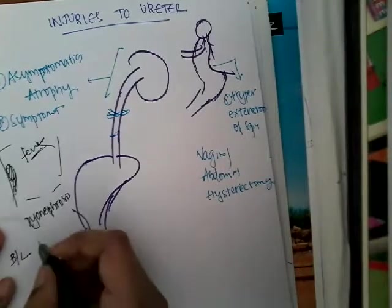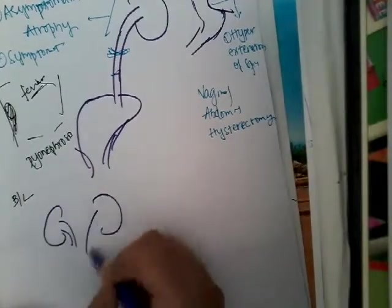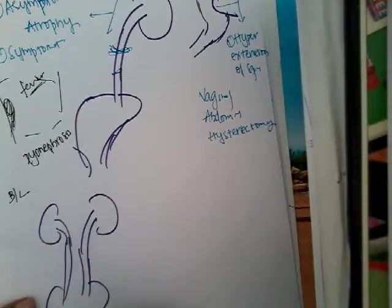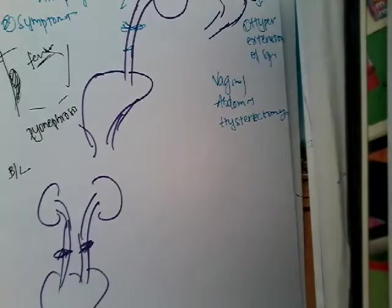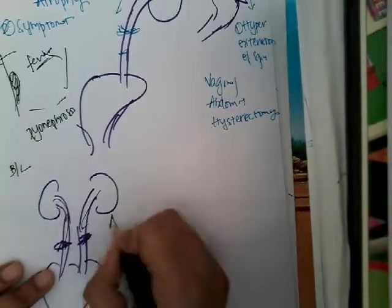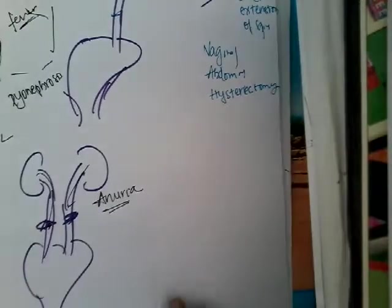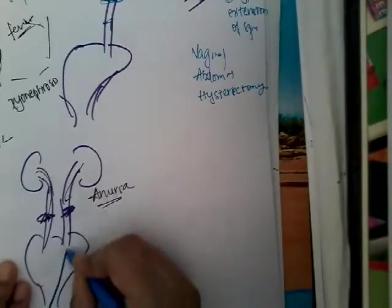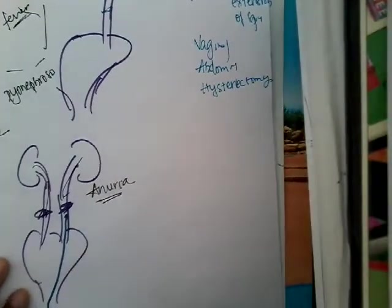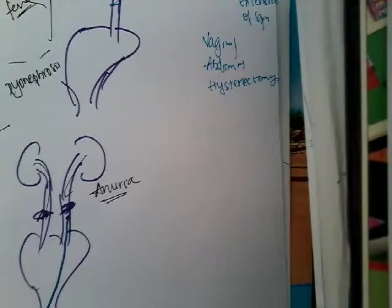Now think about if there is a bilateral injury. If both ureters have been ligated bilaterally, there is no way for the urine formed to come out. As a result, the first and foremost symptom you see is anuria. Even if you try to pass a ureteric catheter, the catheter cannot pass. In cases of bilateral ureteric injury, we will have to do immediate surgery.